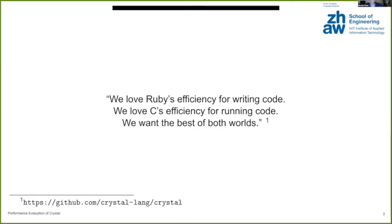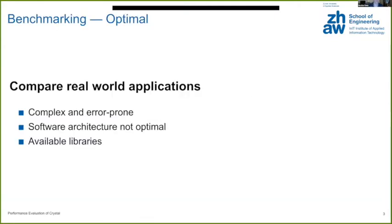To answer the last question, I've had a closer look at benchmarking. In an optimal world, you would use a real world application and convert it into the different programming languages. Unfortunately, there are a few issues with that approach. First off, it's very complex and error prone, meaning that a tiny difference in implementation can have a huge impact on the performance. Additionally, the software architecture chosen for the initial language might not be optimal with the other languages.